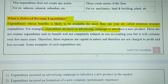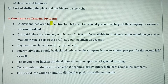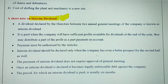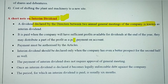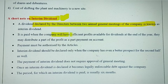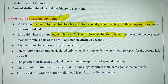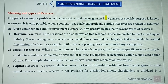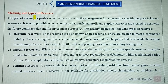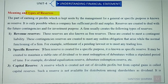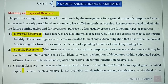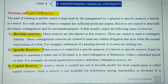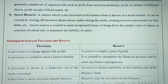Short notes can appear on deferred revenue expenditure — expenditures whose benefits are available for more than one year, for example when a company makes expenditure on advertisements since advertisements have long-term effects. Interim dividend is also an important question that appears frequently in exams. Interim dividend is declared by the directors between two Annual General Meetings of a company and is paid when the company has sufficient profits available for dividend. Unit 4 covers types of reserves: revenue reserves, specific reserves, capital reserves, and secret reserve — which is not disclosed to the stakeholders.